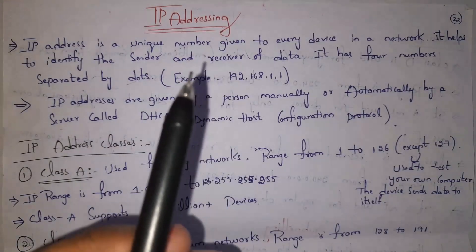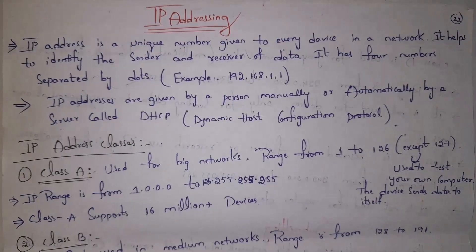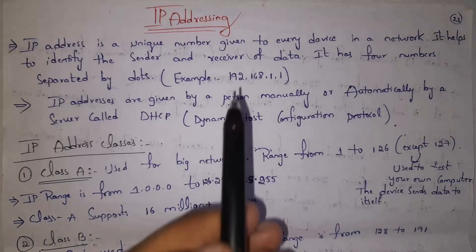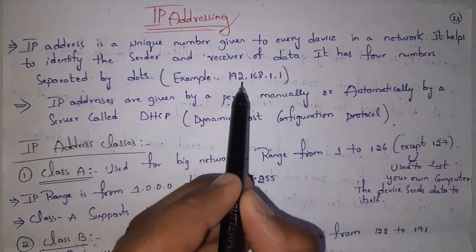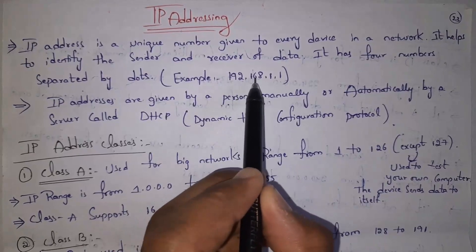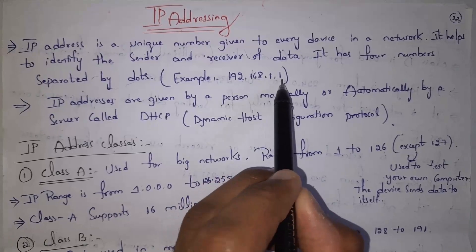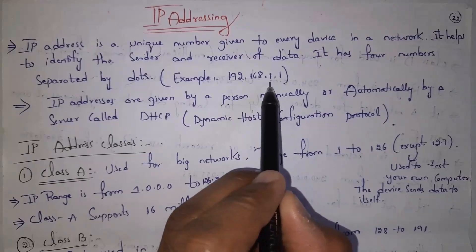Let's first explain what is IP addressing. An IP address is nothing but a unique number given to each and every device in a network. By using this unique number, a sender can send data to a receiver. There are two types of IP addresses: one is IPv4 and the other is IPv6. An IPv4 address has four numbers separated by dots — for example, number dot number dot number dot number.